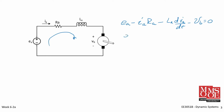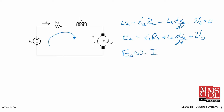Rearranging this equation, we have E sub A is equal to I sub A times R sub A plus L sub A times dI/dt plus V sub B. Taking the Laplace transform, we obtain E sub A of S equals I sub A of S times R sub A plus S times L sub A times I sub A of S plus V sub B of S.